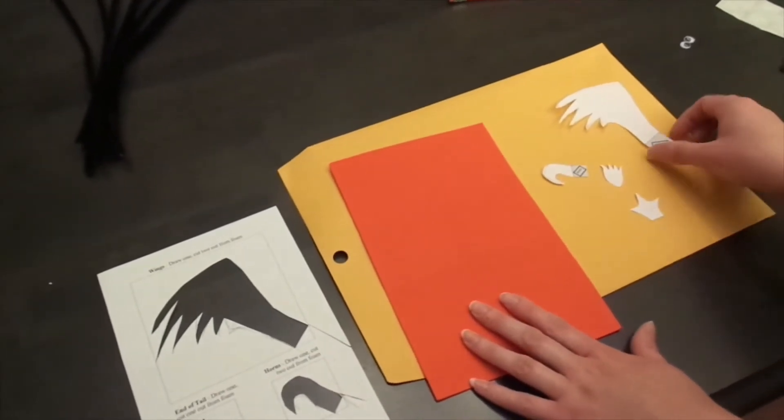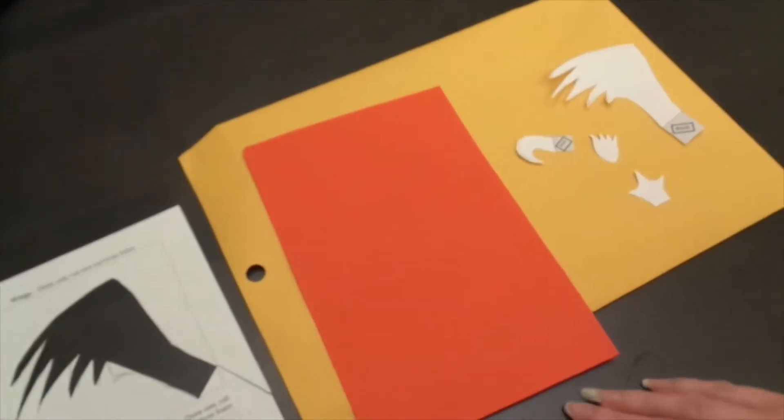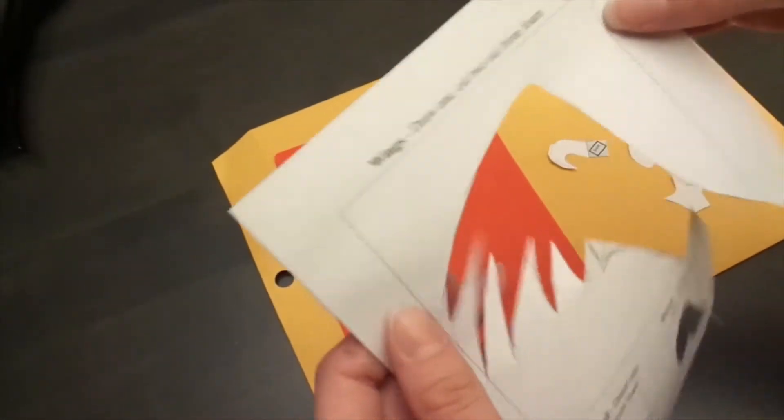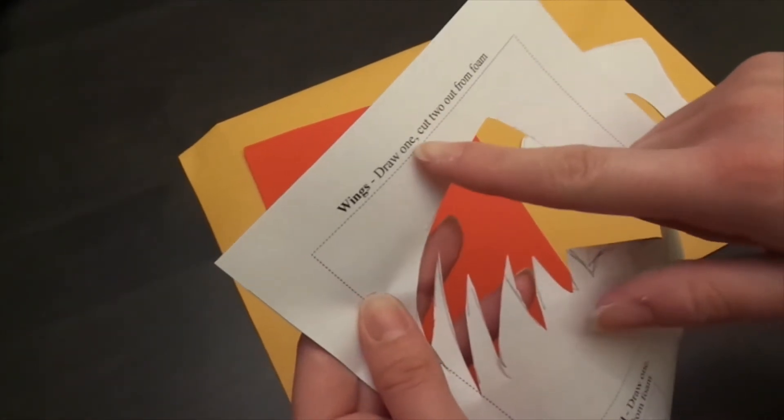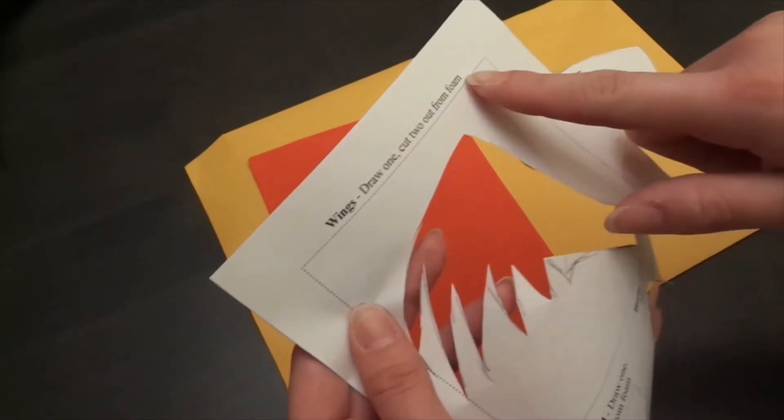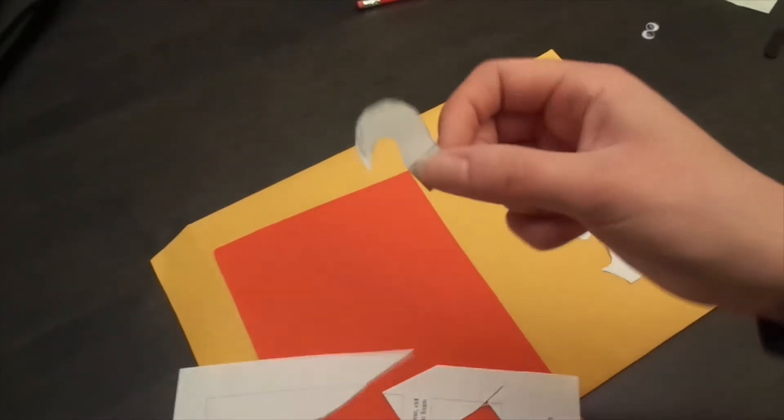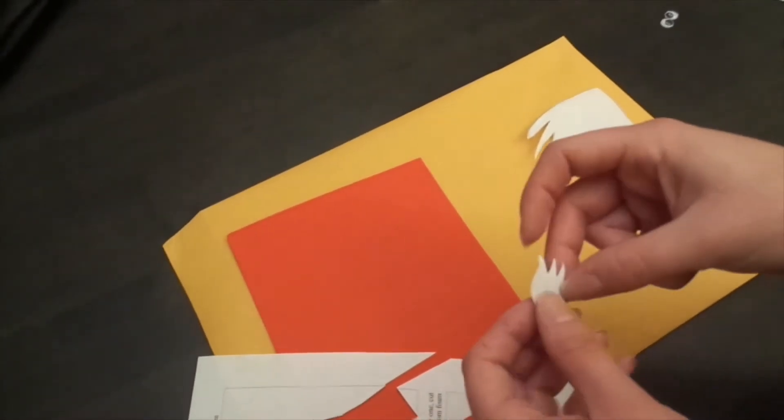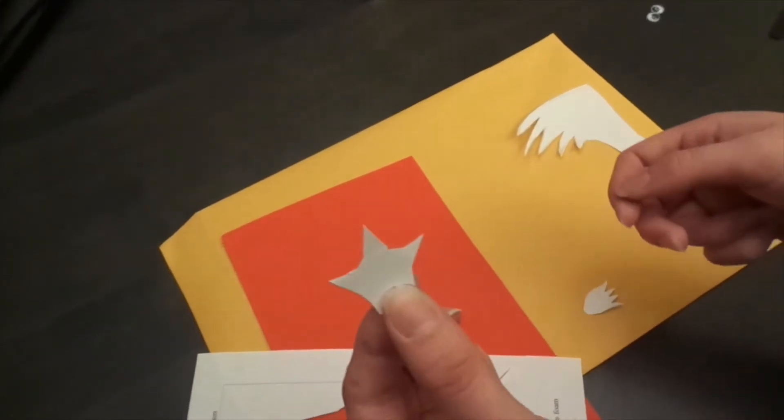Now that I have my pieces cut out from the template, we're going to be cutting them out from foam. Now on your template paper, it will say how many to cut out, but basically you're going to be cutting two wings out, and then the horns, two of these, four feet, and just the one tail piece.